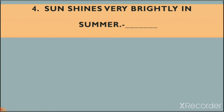True or false number four: Sun shines very brightly in summer. We already learned about the sun in lesson number 14, about different things we see in the sky during day and night. We learned that the sun is a hot ball of fire, and that's why we get heat and light from it. In summer season the sun shines very brightly.